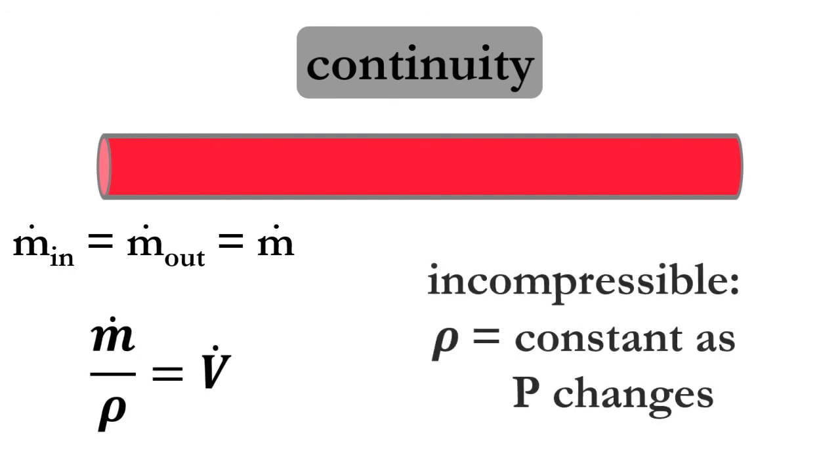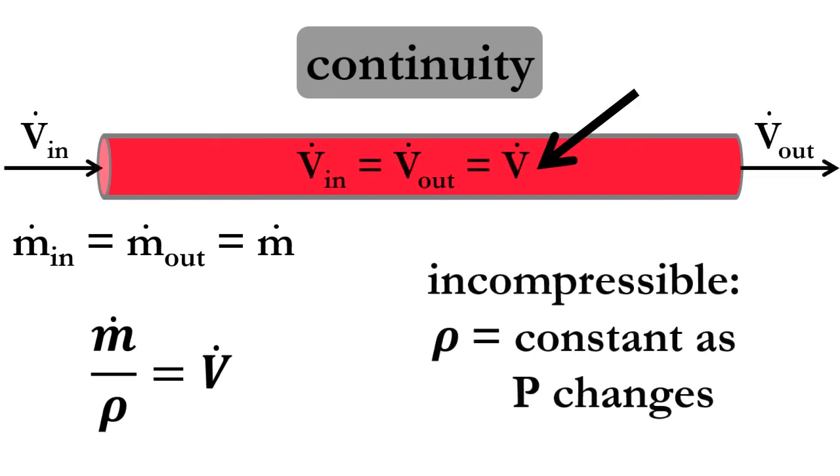From this relationship, we can also see that the volumetric flow rate of an incompressible fluid must be constant through a pipe.